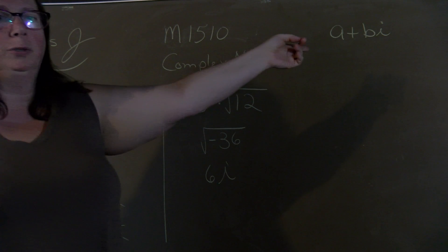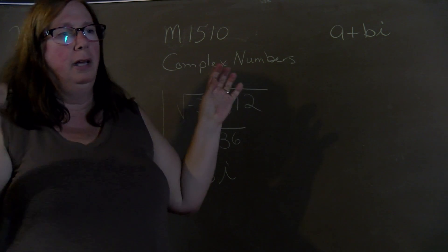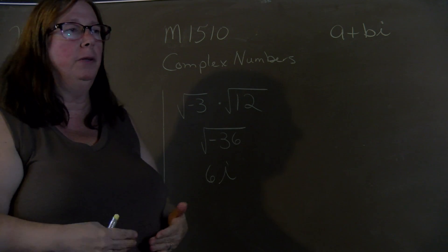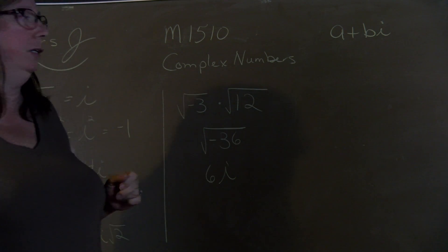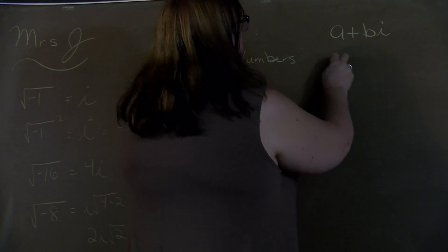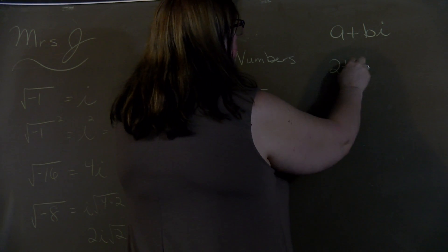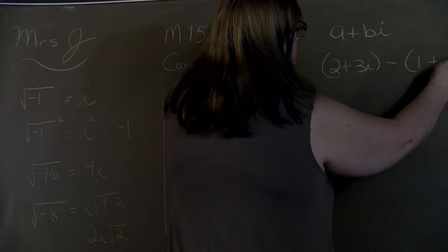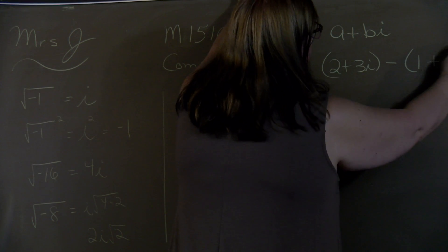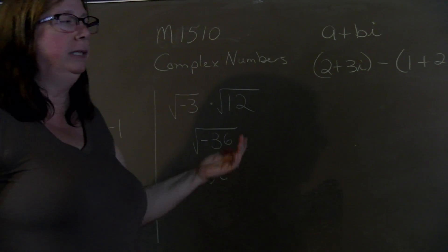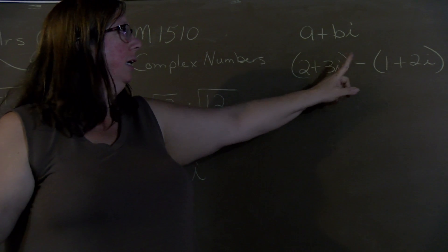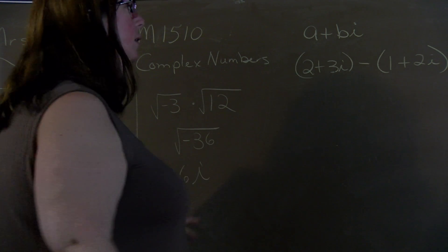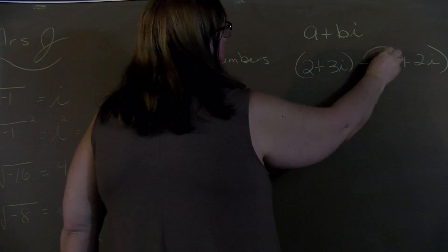Most complex numbers are written in this form. And if you think of your square root rules, when you're adding and multiplying, you can follow those same rules with the imaginary. So if we had 2 plus 3i minus 1 plus 2i, we use the same rules. The imaginary part are like terms and the constants are like terms. And in this case, we would first distribute the negative.